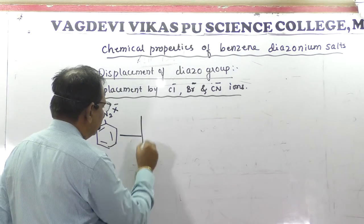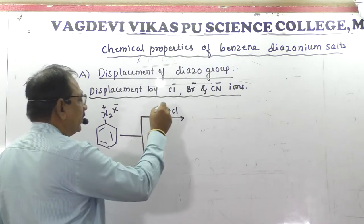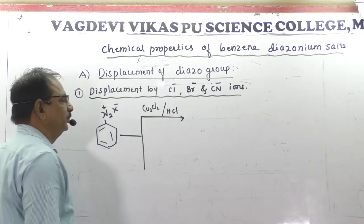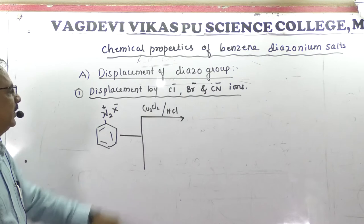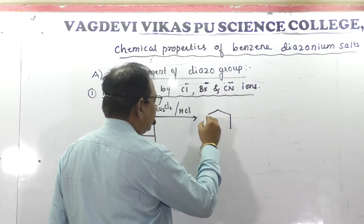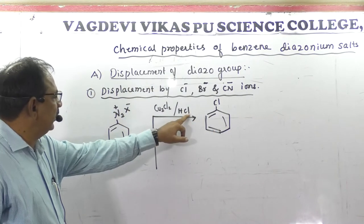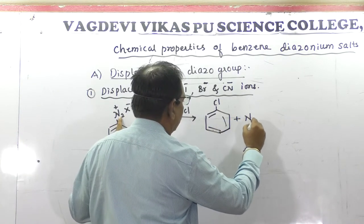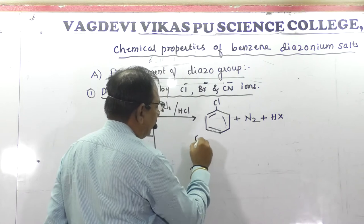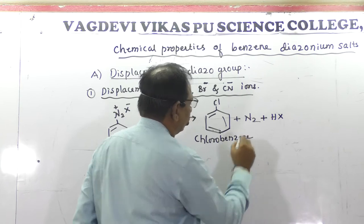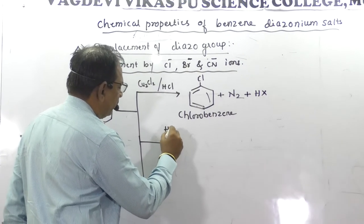If you treat benzene diazonium salt with HCl in the presence of cuprous chloride (Cu₂Cl₂), the Cl⁻ displaces N₂ and X⁻ combines with H to form HX. The product obtained is chlorobenzene. This displacement of nitrogen by chloride in the presence of cuprous chloride is the first reaction.